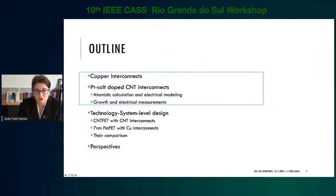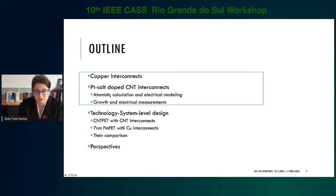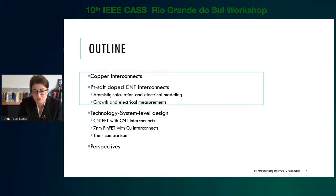The outline of this talk: I'll start with interconnects, covering how we design them — the fabrication methods we have put forward, the type of electrical characterization we obtain, followed by atomistic simulations and physical modeling of carbon nanotubes. Then going into the design technology aspect, comparing the energy delay product with FinFET — the current state-of-the-art CMOS technology — and back-end-of-line with copper interconnects, along with some perspectives.